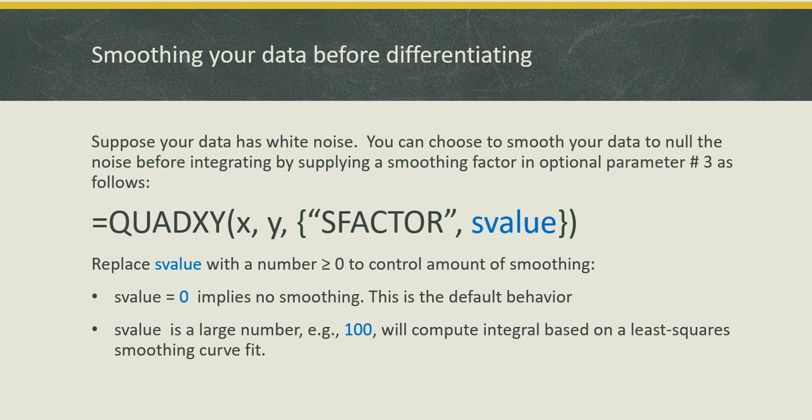The value you supply for the S factor could be anything between 0 and a large value. A 0 implies no smoothing which is the default. But if you supply a large value like for example 100, it will compute the integral based on a least squares smoothing curve fit for the data. So your curve fit will not go through the points necessarily, but it will be the least square best fit between the data.